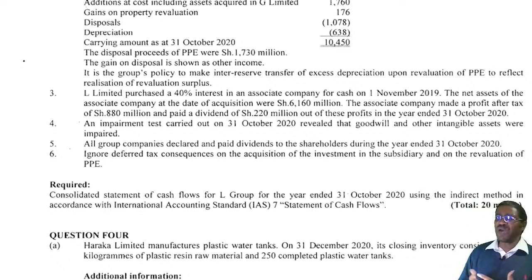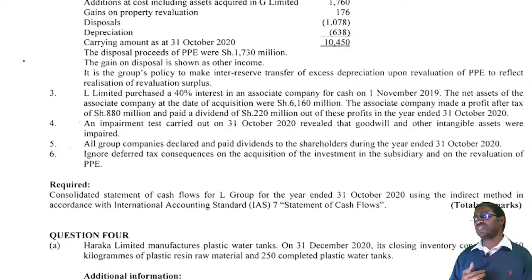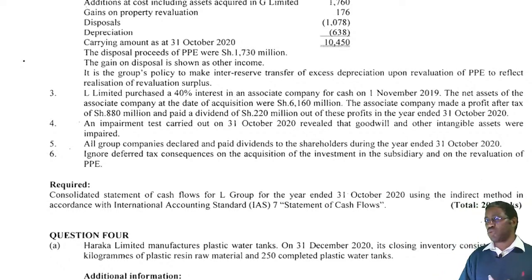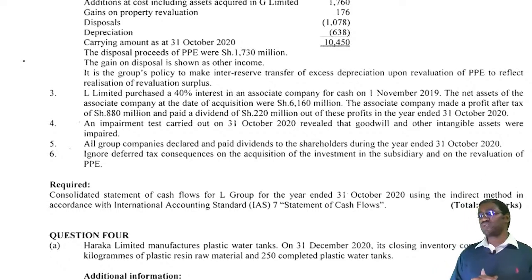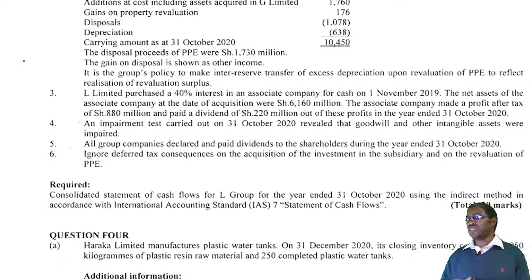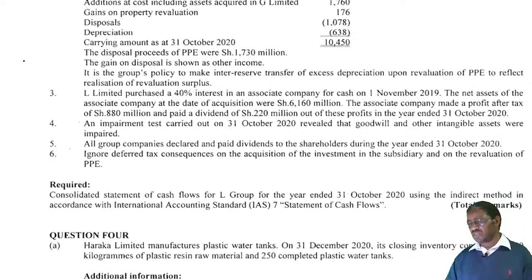Note number four: impairment tests carried out on 31st October 2020 revealed that goodwill and other intangible assets were impaired. Note number five: all group companies declared and paid dividends to shareholders during the year ended 31st October 2020. Note number six: ignore the tax consequences on the acquisition of the investment in subsidiary and on revaluation of property. You are required to prepare a consolidated statement of cash flows for L Limited using the indirect method in accordance with IAS number 7.